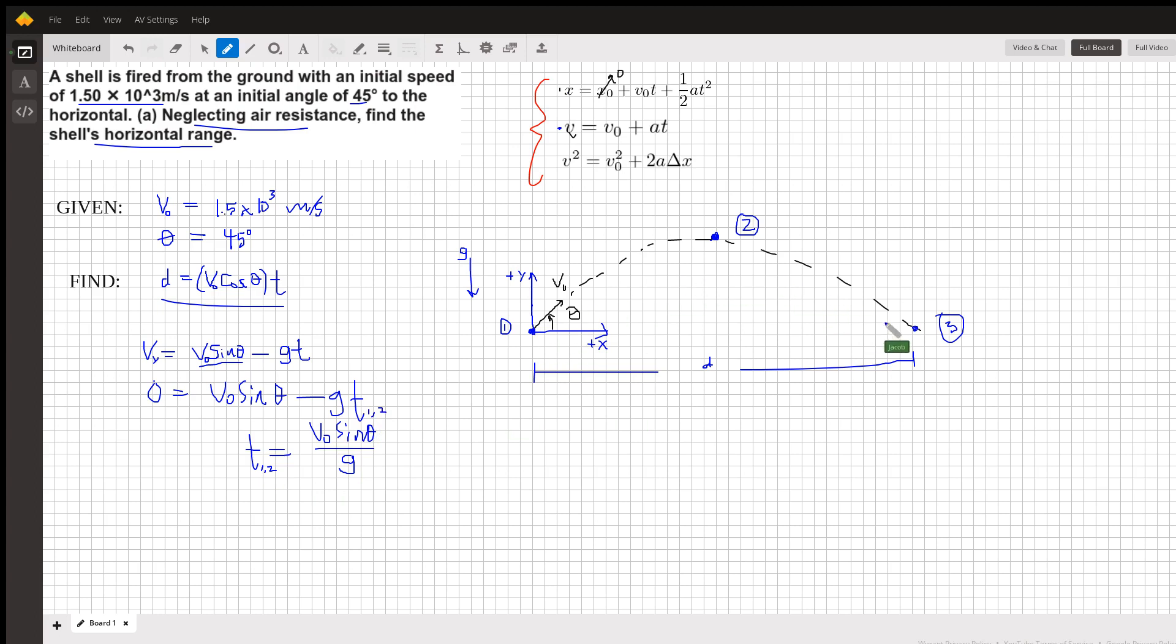But what about the time it takes from point one to point three? So the time it takes to get from point one to point three—since this motion is symmetrical—is just twice the time it takes to get from one to two. So the time it takes to get from one to three is just simply two times this time: two times v naught sine theta divided by g.